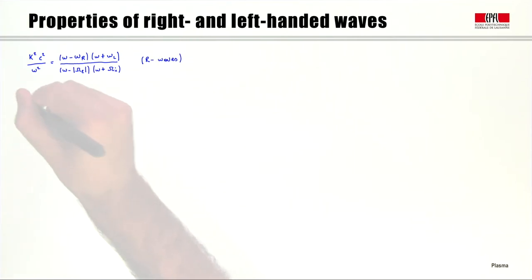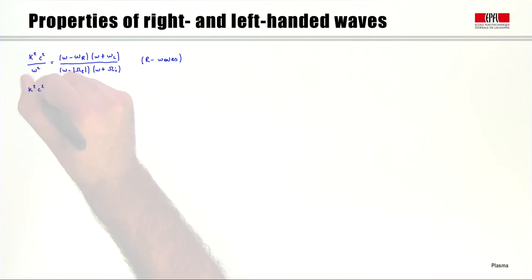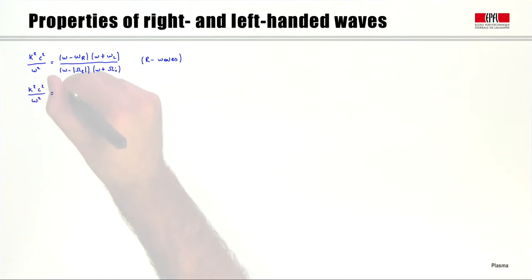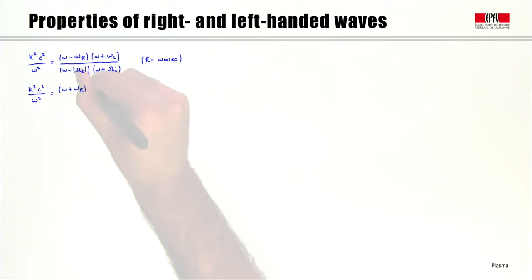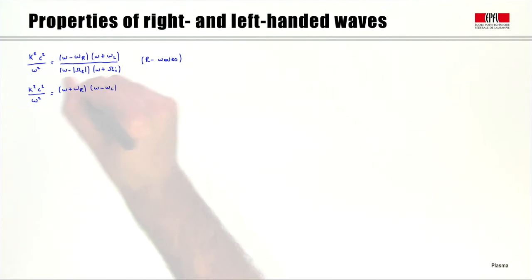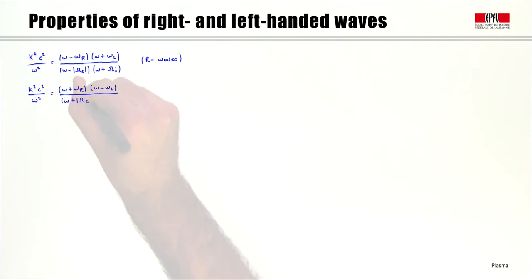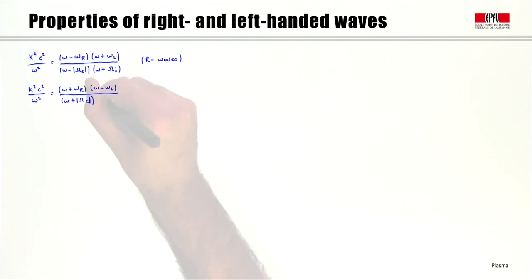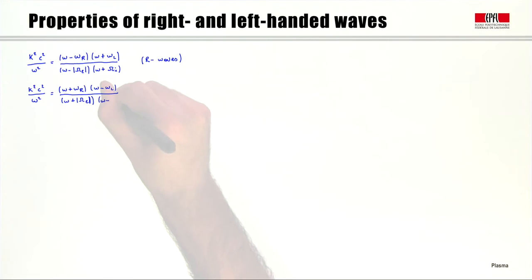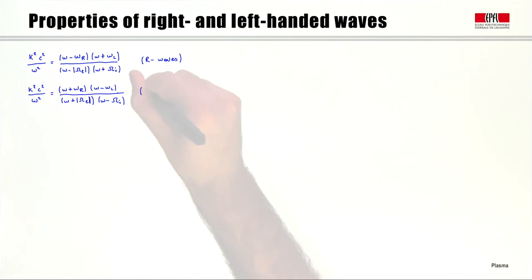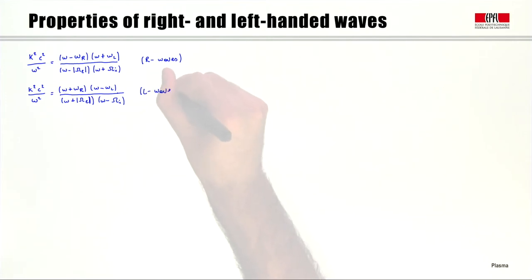For the left-handed waves, k²c²/ω² equals (ω + ωr)(ω − ωl) divided by (ω + ωce)(ω − ωci), where we basically invert the sign of the expression. These are the left-handed waves. Let's recall for a moment why these waves are called right-handed and left-handed.